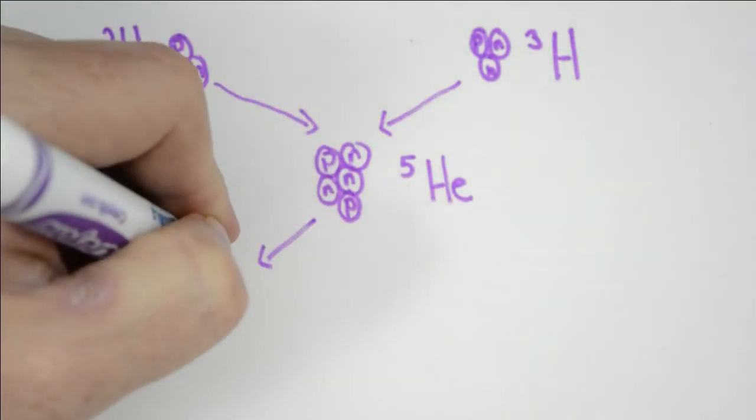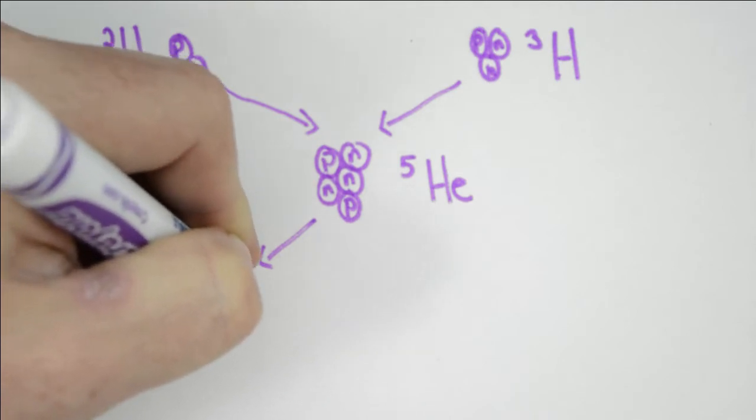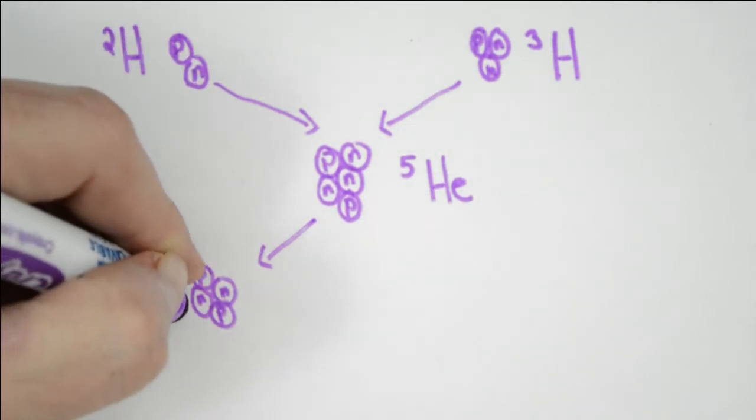Helium 5 will then fall apart, and it will make helium 4, the common form of helium we know, and that also leaves one neutron.